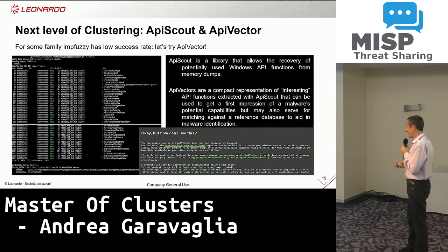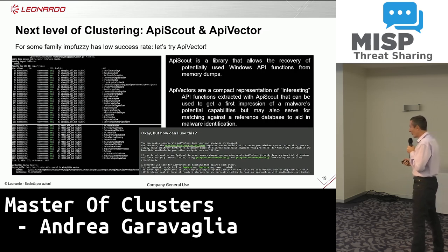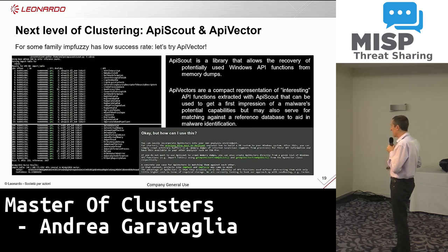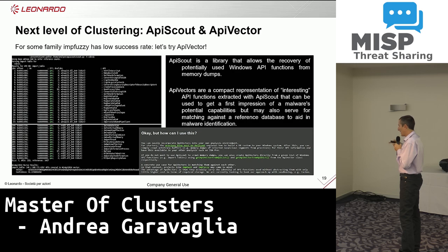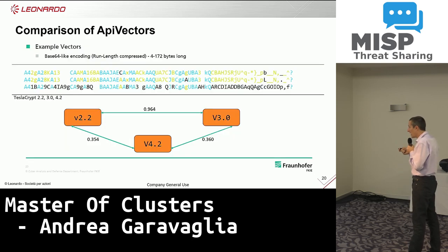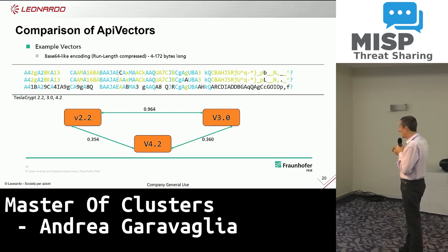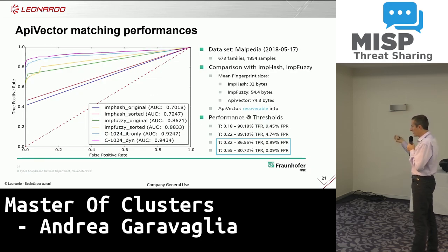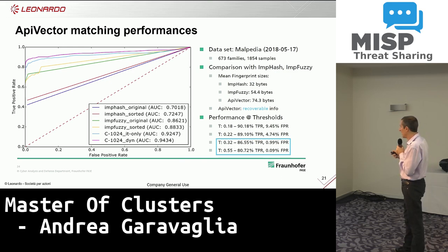For some families I found that ImpFuzzy was not performing so well, so I searched and found another thing to try: ApiScout. ApiScout is developed by the same team maintaining Malpedia. It does some calculation against the import address table but also compares against the standard Windows libraries. I'm not really interested in what the algorithm is doing internally — I'm interested in the performance. You can see three samples of TeslaCrypt of different versions and the values it produces for each sample.